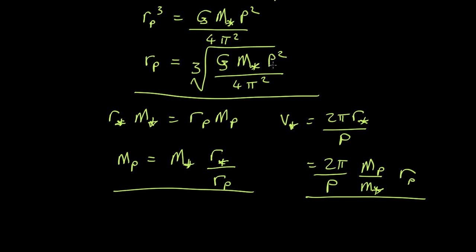So if you know the period we can work out how far out the planet is. Once we know that, if we know either the velocity of the star or the radius at which it's moving, we can work out the mass of the planet.